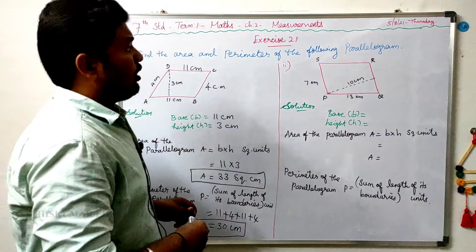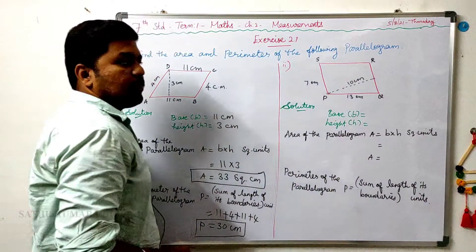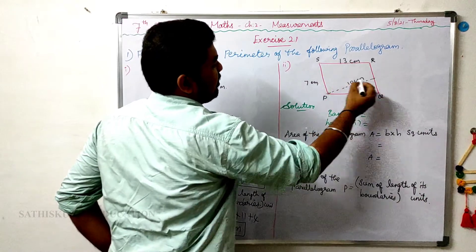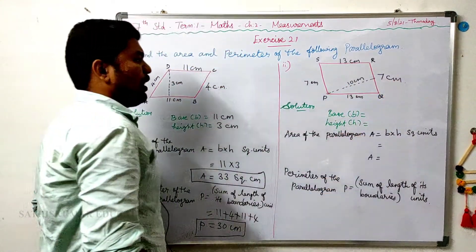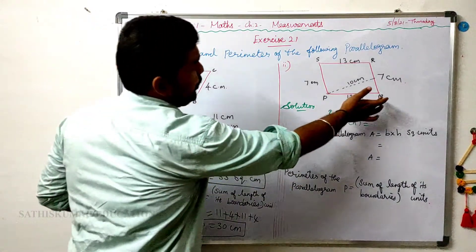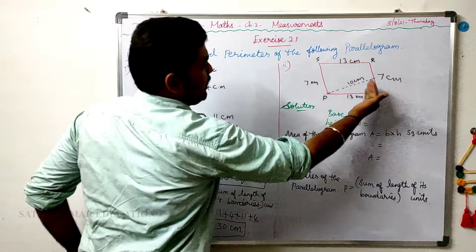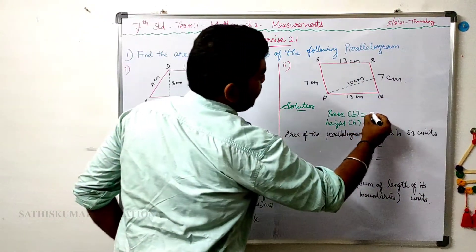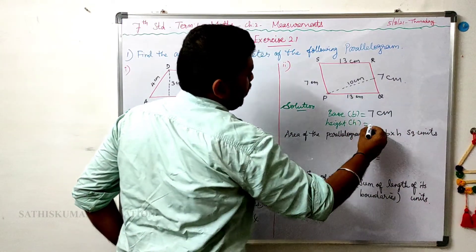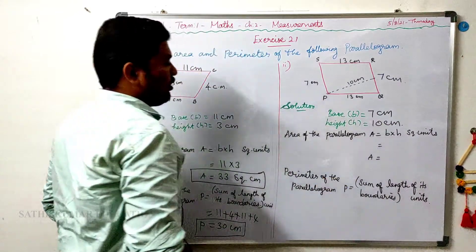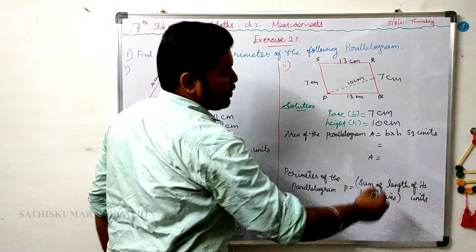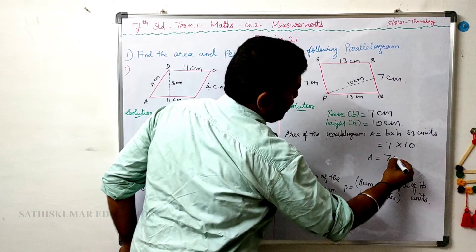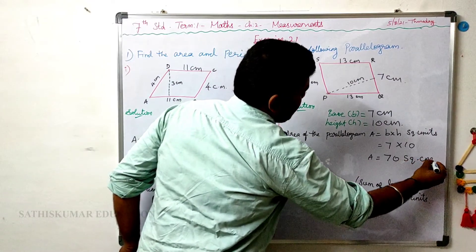We will see the second one. The parallelogram is PQRS. The side PQ is 13 centimeters and the side QR is 7cm. The base is 7cm and the height of the parallelogram is 10cm. Area of the parallelogram A is equal to base into height square units. So base is 7cm and height is 10cm — 7 tens are 70 square centimeters.